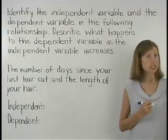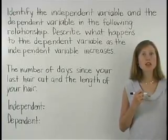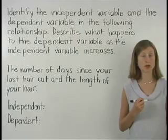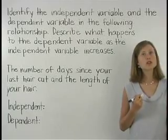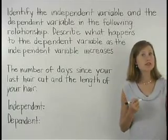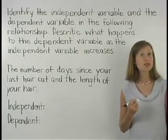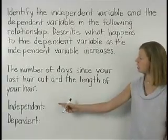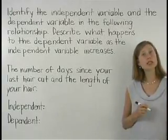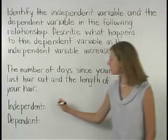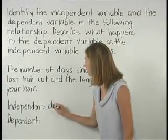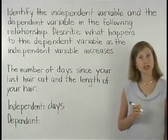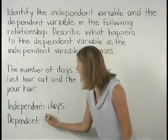In a dependency relationship, the dependent variable depends on the independent variable. So here, since the length of your hair depends on the number of days since your last haircut, the independent variable will be the number of days since your last haircut, and the dependent variable will be the length of your hair.